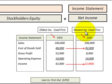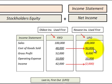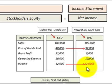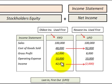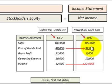Now looking at LIFO — this is where we used our newest inventory first, so cost of goods sold would be our newest inventory with the higher costs. With sales of $100,000 less $92,000 cost of goods sold, our gross profit would be only $8,000. Subtracting operating expenses of $10,000, we would actually have a negative net income of $2,000. So you can see the comparison: FIFO had greater net income than LIFO, because FIFO's cost of goods sold included the older inventory with lower costs versus LIFO, which included the newest inventory with the higher costs.